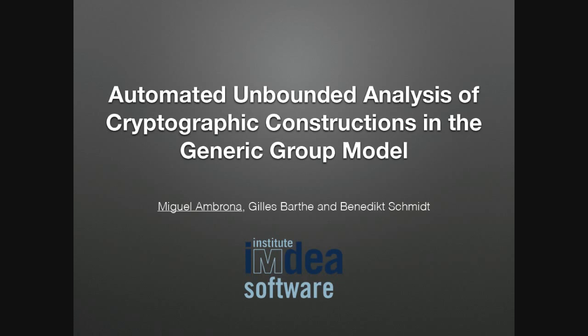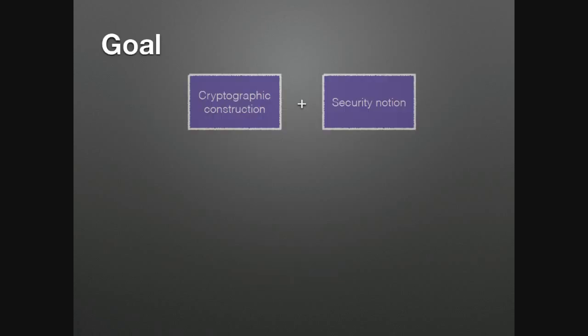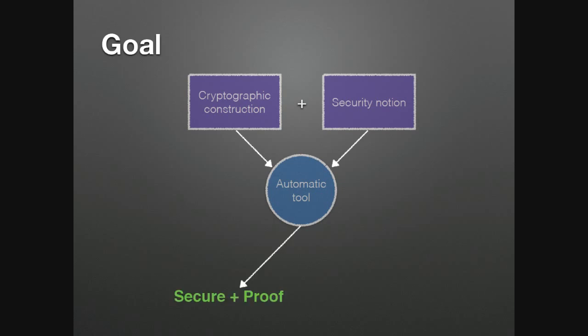Thank you for the introduction. I would like to start by talking about our goal. We are interested in building a tool that, on input a cryptographic construction and a security notion, automatically performs an analysis and outputs either 'the scheme is secure' — in which case we also want a proof of security — or 'the scheme is insecure.' Of course, we cannot hope to solve crypto and build a perfect tool that works for every scheme, and we will focus on a particular framework.